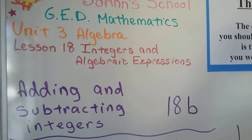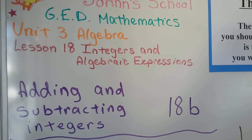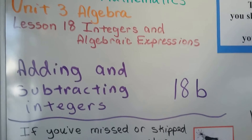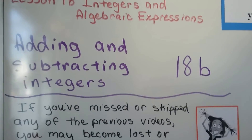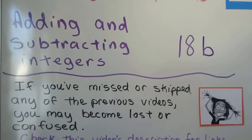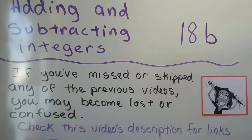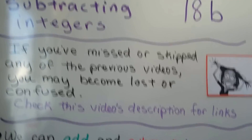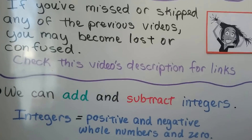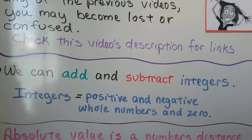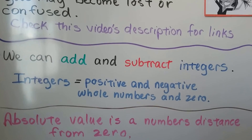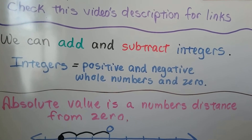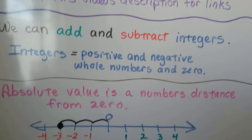We're at lesson 18b and we're going to be adding and subtracting integers. If you don't know what integers are, you can click the description and see 18a. Integers are positive and negative whole numbers and zero.